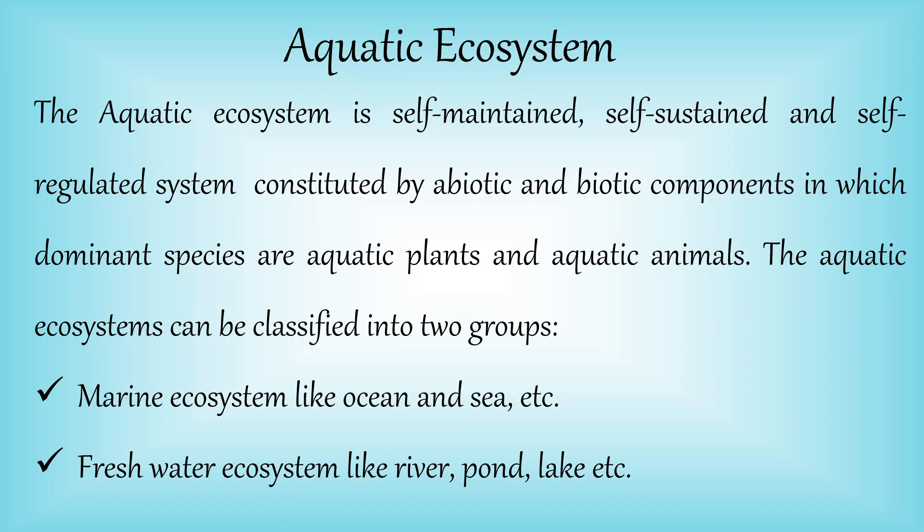A typical aquatic ecosystem is self-maintained, self-sustained, and self-regulated system which is constituted by abiotic and biotic components, in which the dominant species are aquatic plants and aquatic animals — that is, plants and animals which can live and grow in water.